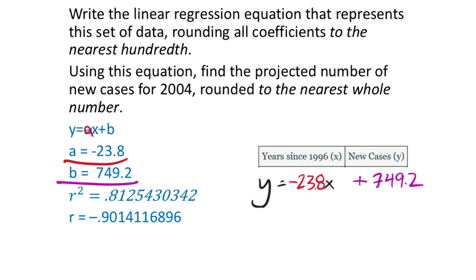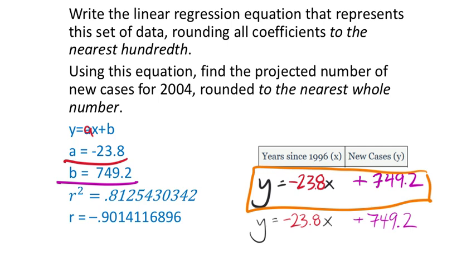I can put that into the assignment. Then we can answer the second part, which is using this equation, find the projected number of new cases for 2004, rounded to the nearest whole number. I'll box this in because that's one of our answers. I got to find out what's the projected number of new cases for the year 2004.